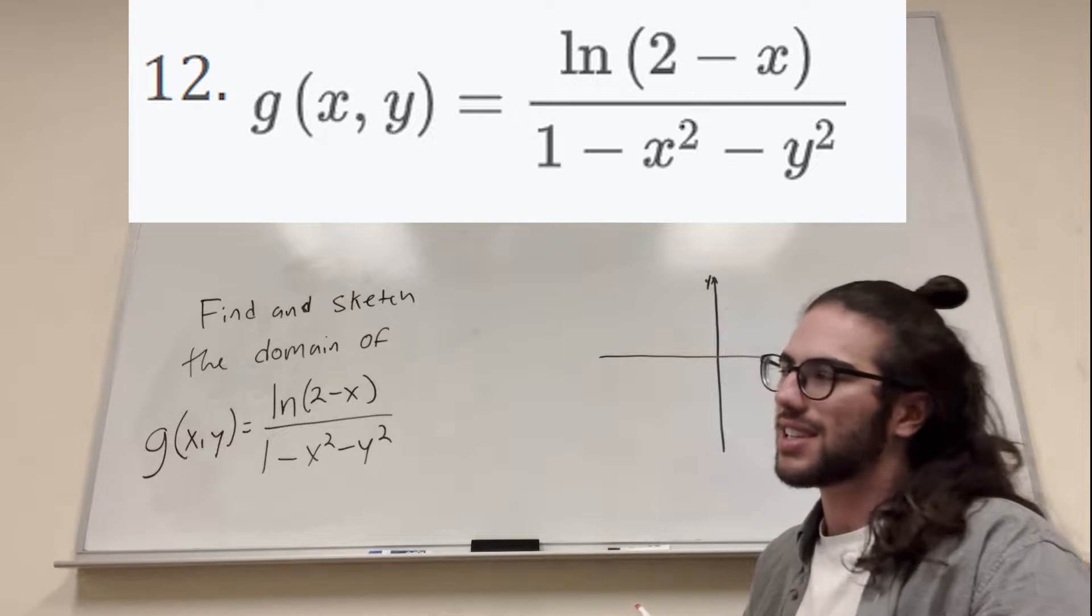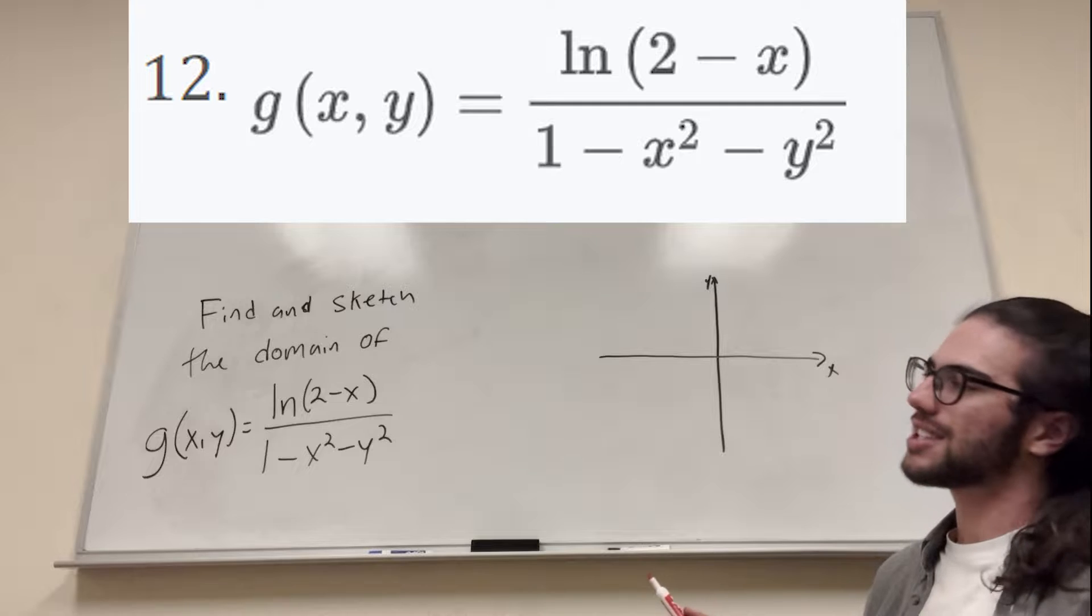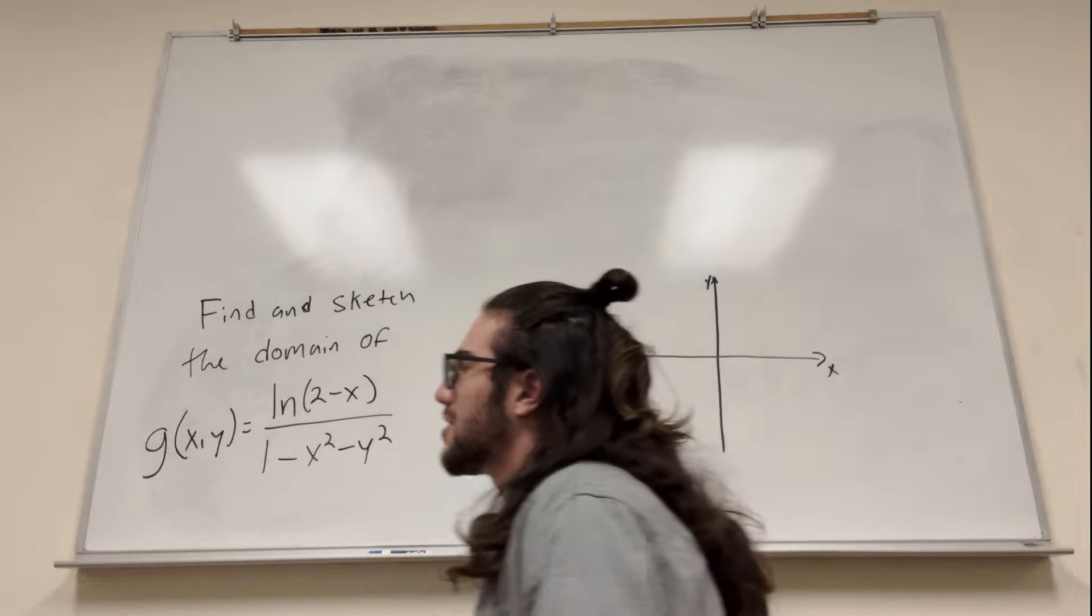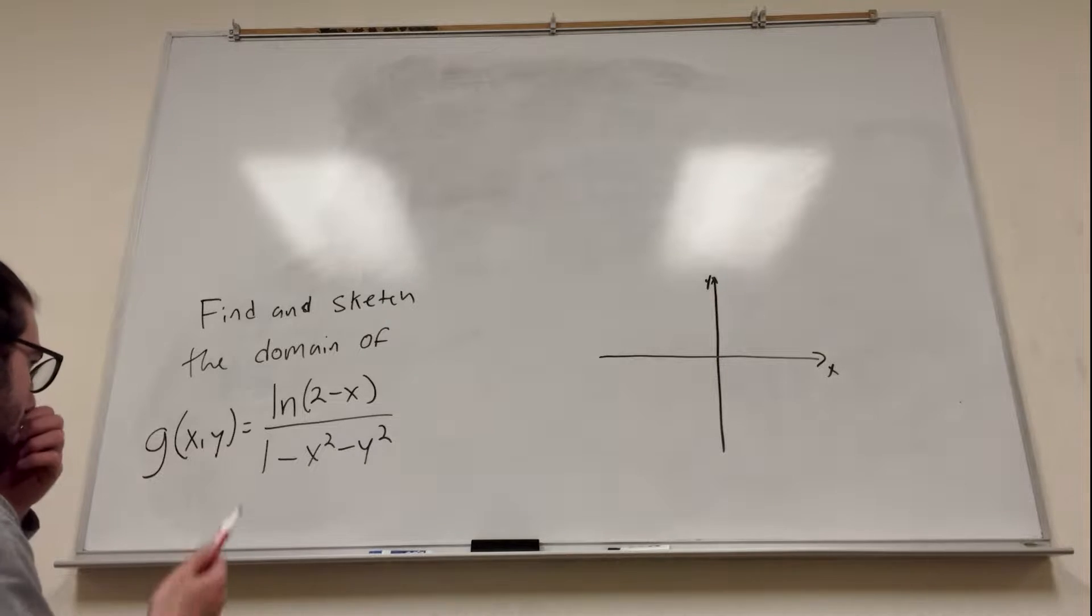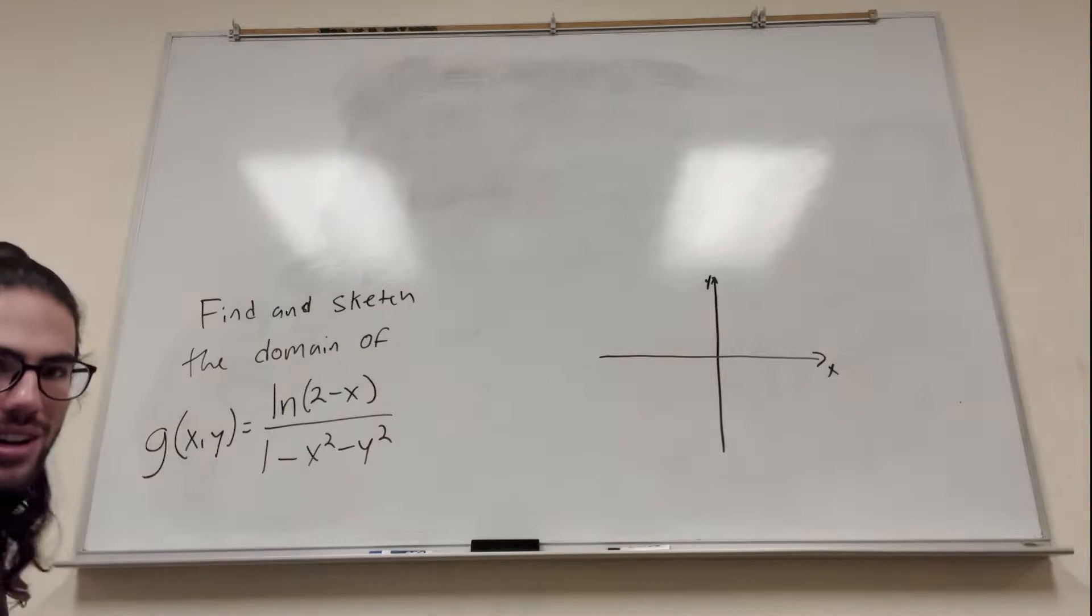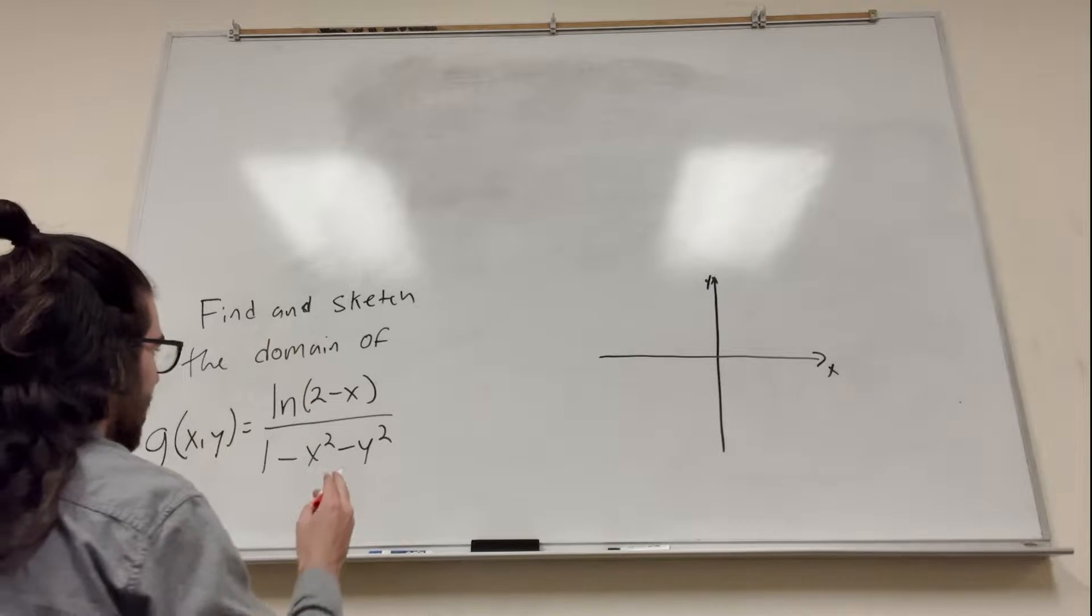The domain is where it's qualified, basically, where does it exist, where can you plug in numbers and get functions of it. So what you can do is break it into parts because we want to find where it exists, and of course you know that ln of 2 minus x does not exist where the inside is 0 or less than 0.